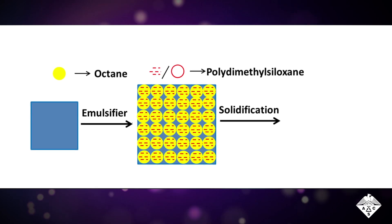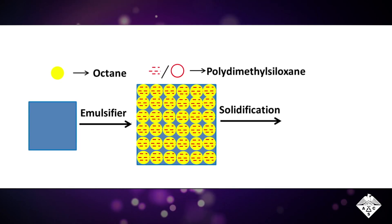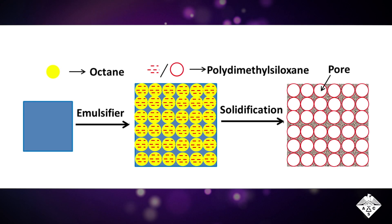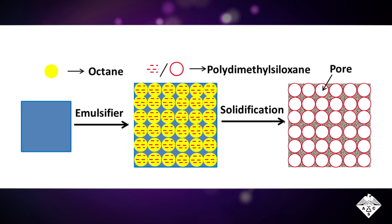With the help of the emulsifier, the oil formed many tiny droplets that contained PDMS. The team then dried and heated the concrete, evaporating the oil so that PDMS-coated pores were left behind.